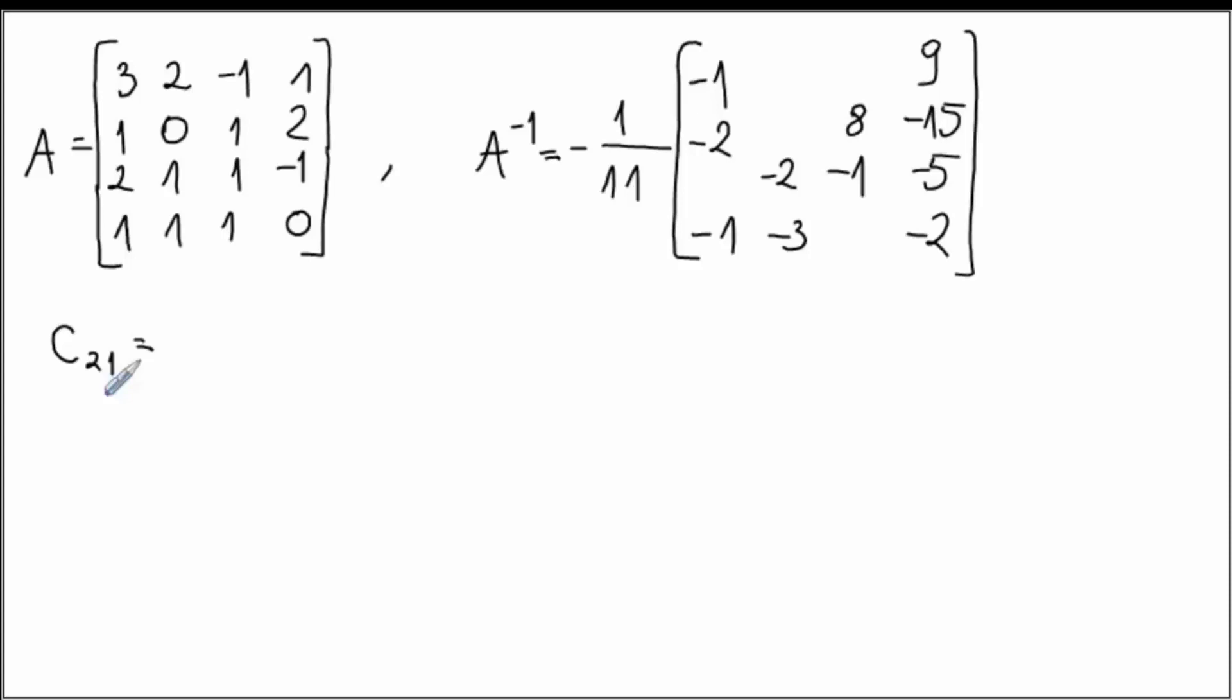And now we go by definition. It's negative 1 to the power 2 plus 1 is 3, so it's actually a negative. And remove second row, first column, you get a sub-matrix like this.